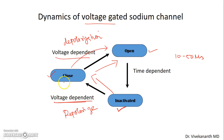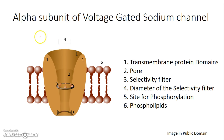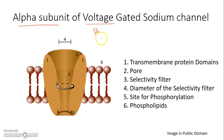In this video, we are going to discuss the molecular mechanism of how these three different states are changed. This is an alpha subunit of a voltage-gated sodium channel. The channel also has other subunits like beta and other regulatory proteins, but this alpha subunit has the pore and is the major functional unit.